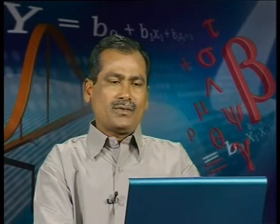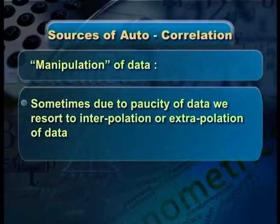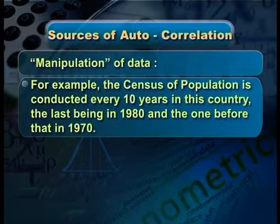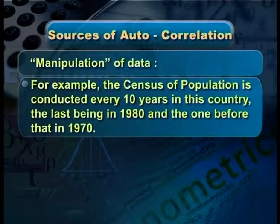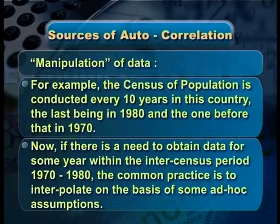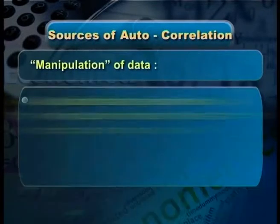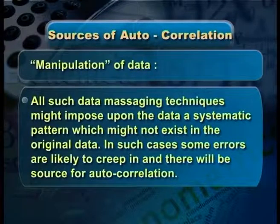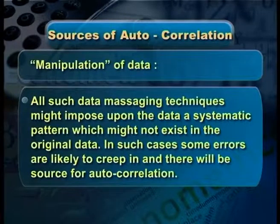Another important cause is manipulation of data. Sometimes due to paucity of data we resort to interpolation or extrapolation. For example, the census of population is conducted every 10 years — the last being in 1980 and the one before that in 1970. If data is needed for years within the intercensus period (1970–1980), the common practice is to interpolate on the basis of some assumptions. Such data massaging techniques might impose a systematic pattern on the data which might not exist in the original data, and errors are likely to creep in, creating a source for autocorrelation.